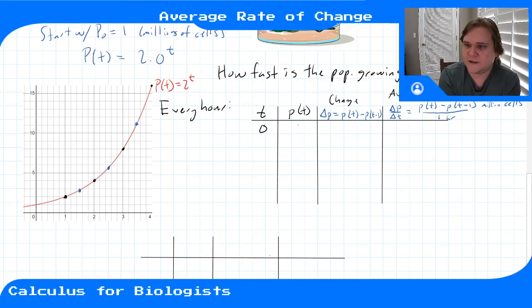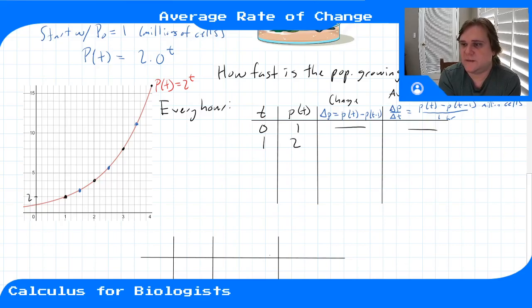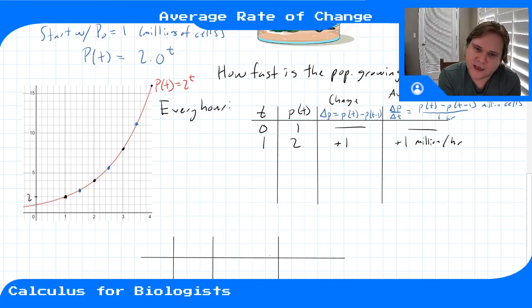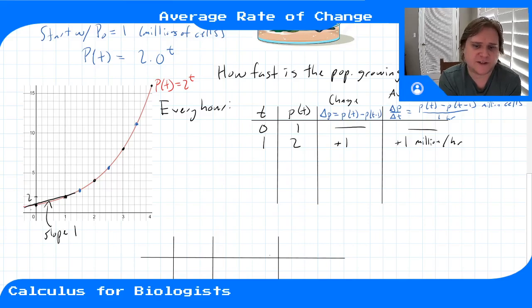At time zero, our population is one million, and there's no change since we're ignoring negative time. At time one hour, the graph gives us two million. The change from hour zero is plus one million. So the average rate of change is one million new cells per hour, on average over this hour-long window. If we draw a line between hours zero and one, we're saying that if this were changing constantly over this interval, it would have slope one million per hour — that's the average rate of change.